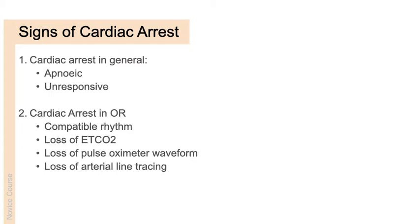How do signs of cardiac arrest differ under GA? Normally, an unresponsive apnoeic patient is considered in cardiac arrest — but that's also what adequate general anaesthesia looks like, so those signs are very poorly specific. In the operating room, we rely on continuous monitoring: a compatible rhythm such as VT or VF, severe bradycardia or asystole; end-tidal CO2 traces — mandatory — whose amplitude decreases as cardiac output drops; and pulse oximeter waveforms that will diminish with reduced perfusion.